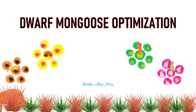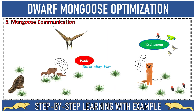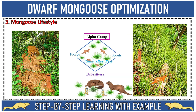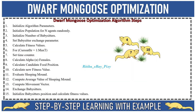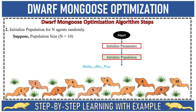This algorithm is basically inspired by the foraging behavior of mongoose in real life. In this video we will try to understand how this algorithm mimics mongoose behavior, their lifestyle, foraging strategies, and we will understand how the algorithm works step by step using an algorithm flowchart.